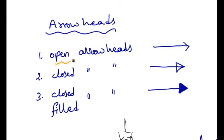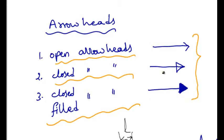Open arrowheads, closed arrowheads, and closed and filled arrowheads. These diagrams represent the three types of arrowheads.